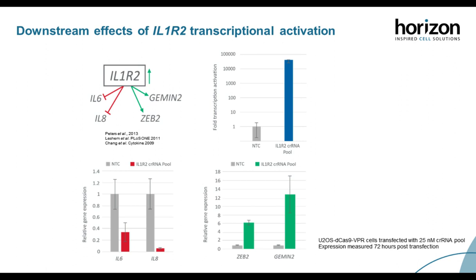Another interesting aspect of gene activation is looking at effects on downstream pathway genes. We looked at IL-1R2, which when activated should inhibit production of IL-6 and IL-8 and increase expression of Zeb-2 and Gemin-2. The upper graph shows more than 10,000-fold activation of IL-1R2 using a CRISPR RNA pool. We then detected expression of known downstream targets and indeed observed inhibition of both IL-6 and IL-8 and upregulation of Zeb-2 and Gemin-2, demonstrating the utility of CRISPR-A for understanding downstream effects.